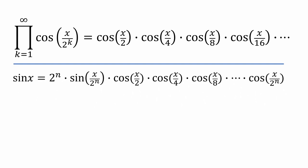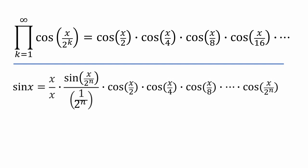This expression is going to need a little more work. Let's multiply by x over x and also move 2 to the n to a new home. Doing this has not changed the value of our sine x expression one bit, but it has set us up for a clever trick.